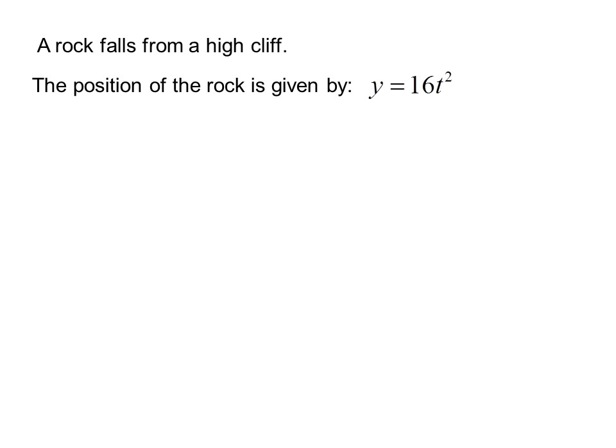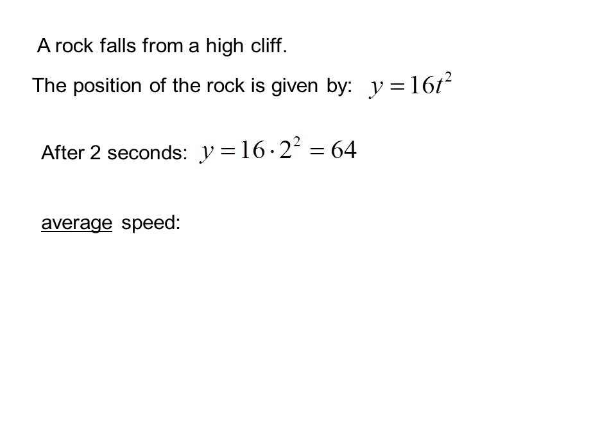A dramatic story: a rock falls from a high cliff. The position of the rock is given by y equals 16t squared. Notice in this case we made positive the down direction — because it's our problem, we can make positive in any direction we want. After 2 seconds, y equals 16 times 2 squared, or 64. The average speed, v average, is 64 feet divided by 4 seconds, or 32 feet per second.